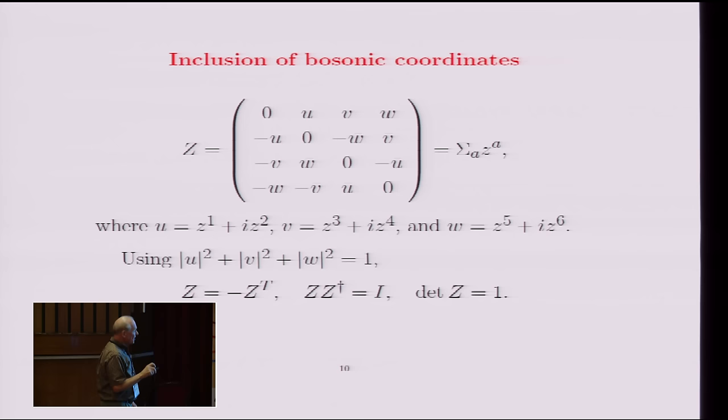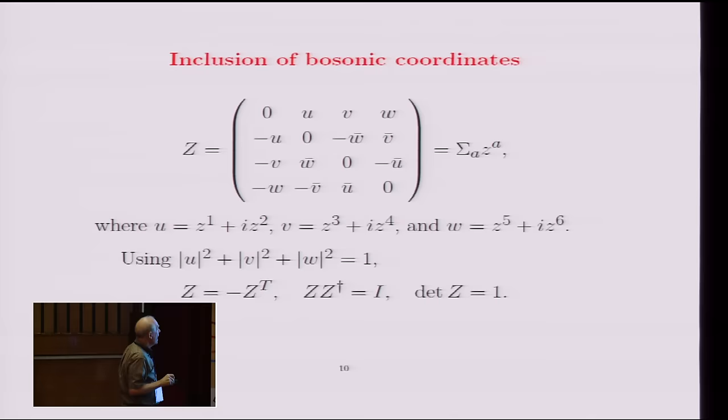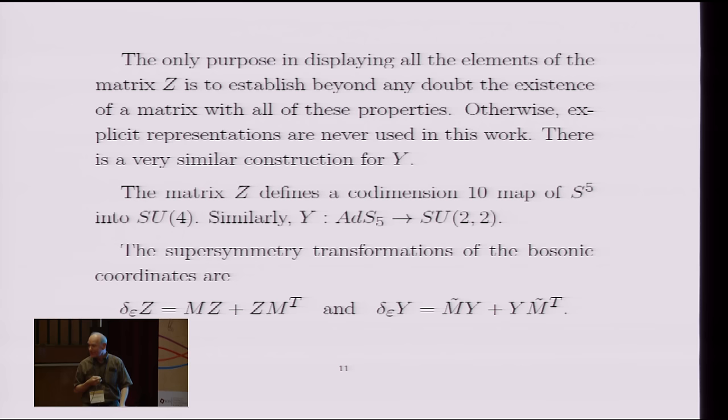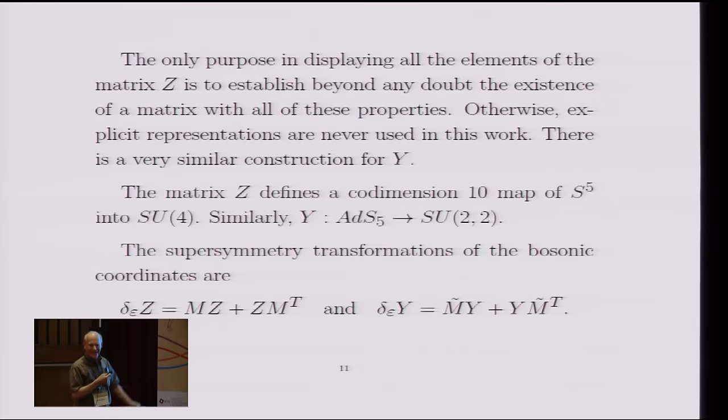So what this formula does is it tells you how to embed a five sphere into the group manifold SU(4). So it's a co-dimension 10 map of S5 into SU(4). So this matrix has appeared previously in the literature. I just noticed that very recently.